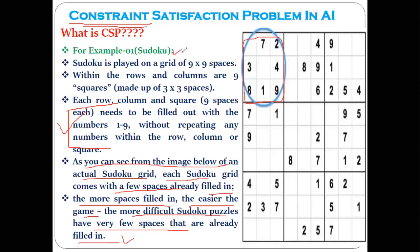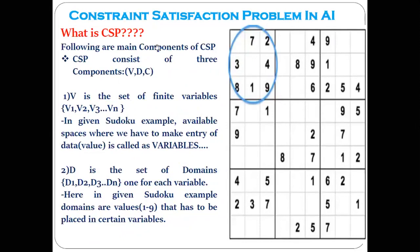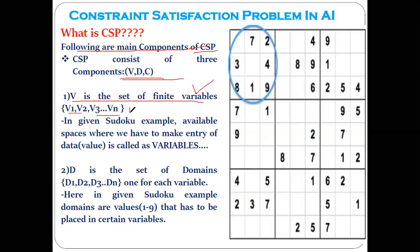Sudoku is one of the popular examples related to the constraint satisfaction approach. Now we need to understand some basic components or attributes of CSP, which you also have to explain in the exam. There are three main components of the constraint satisfaction problem, represented using three letters: V, D, and C. The first one is V, which stands for the finite set of variables, like V1, V2, V3 up to Vn.